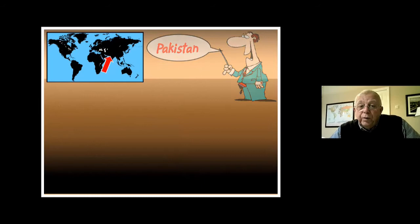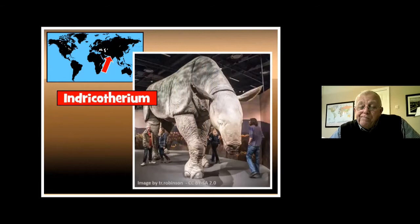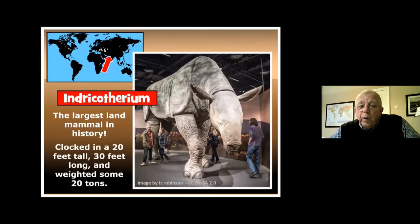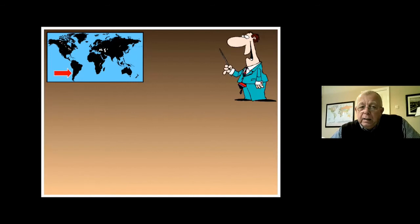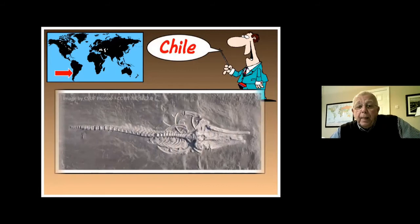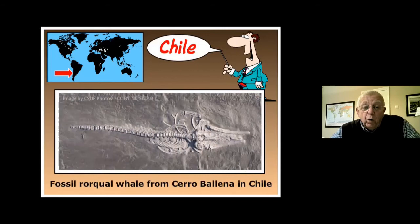Pakistan — Indricotherium, the largest land mammal in history: a reconstruction shows it clocked in at 20 feet tall, 30 feet long, and weighing some 20 tons, dwarfing the elephants. Chile — a fossilized bowhead whale from Cerro Ballena in Chile; there's one of the brushes the archaeologists were using to brush it away to give you an idea of the scale.